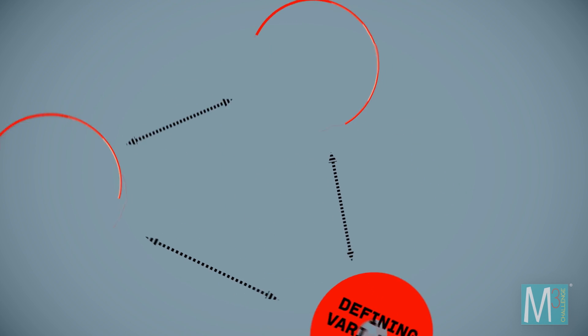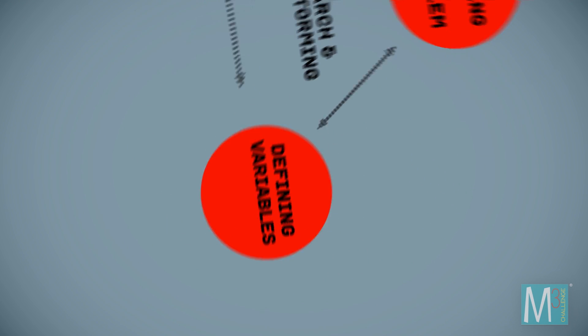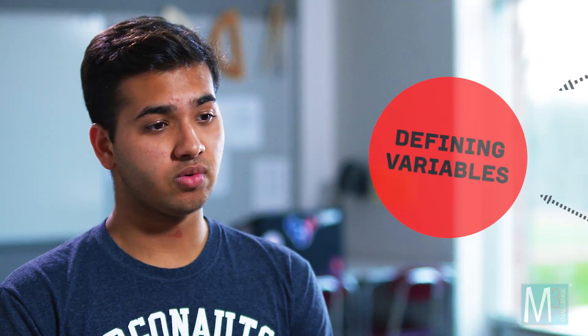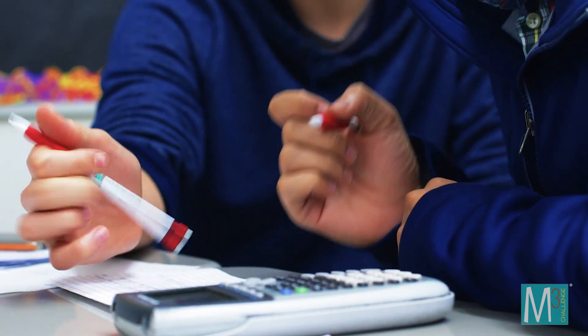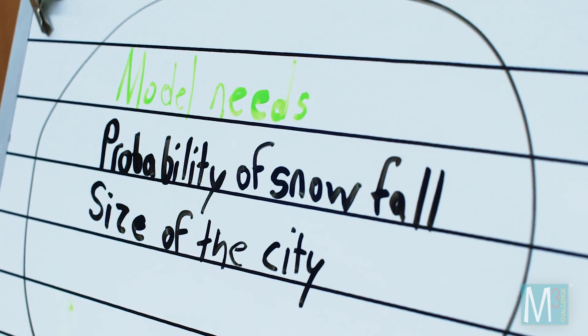Next, define your variables. If you're trying to make a mathematical model, you are trying to create an equation of some sort that incorporates certain variables. By defining those variables, by figuring out what those variables are, especially early on, you know what you're looking for.